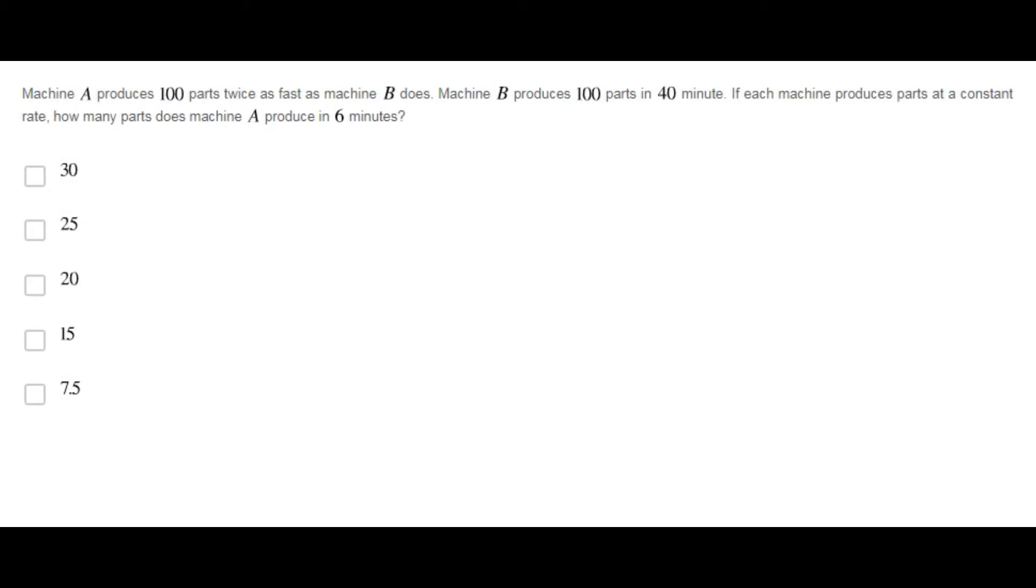Machine A produces 100 parts twice as fast as machine B does. Machine B produces 100 parts in 40 minutes. If each machine produces parts at a constant rate, how many parts does machine A produce in 6 minutes?